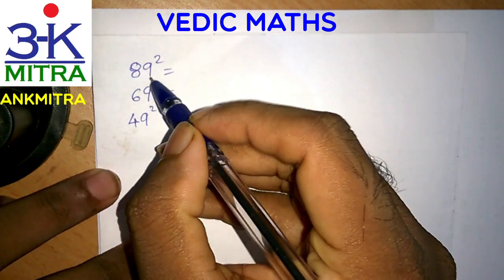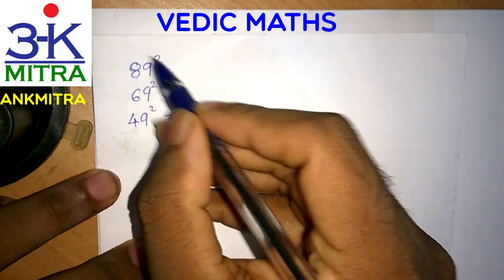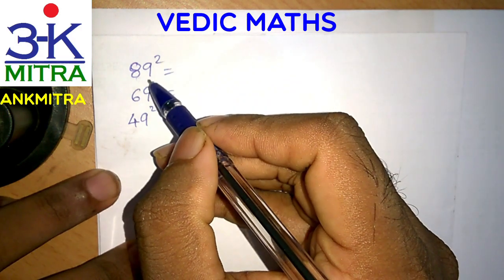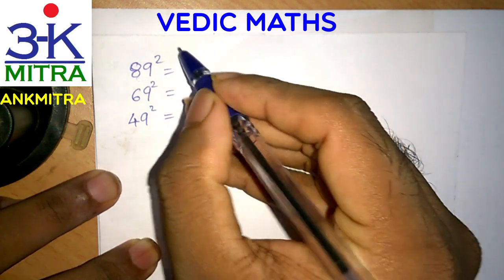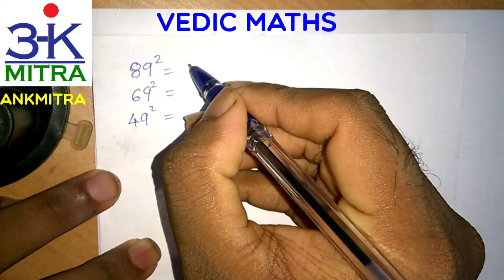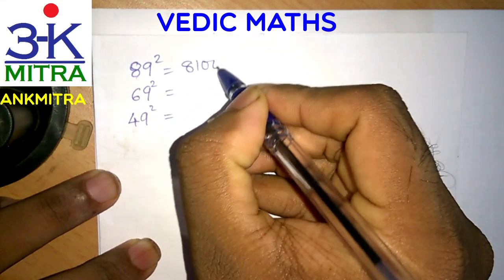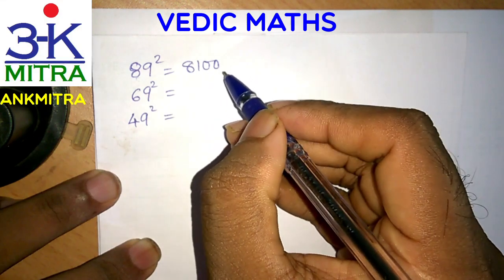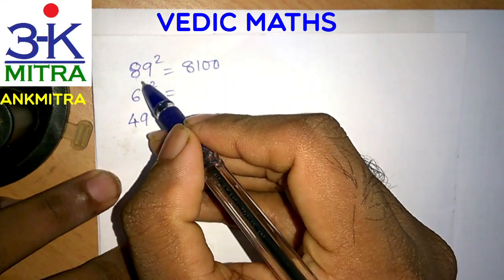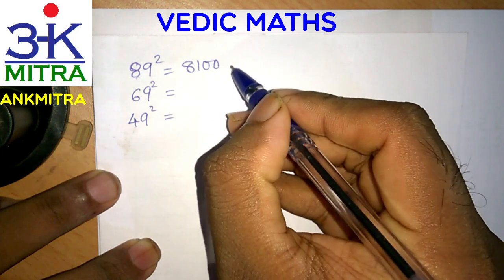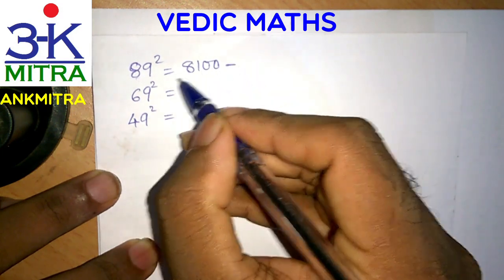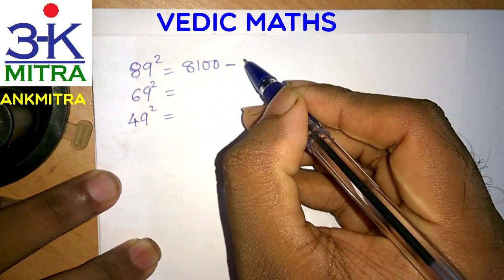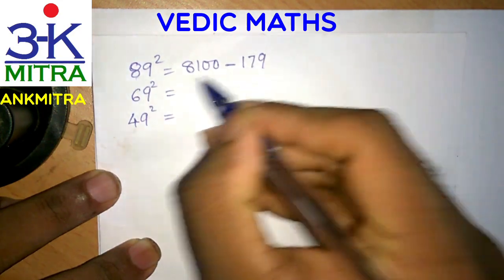So the first part is quite similar. 89 is one short of 90, 90 being the nearest perfect round number. We'll first write down the square of 90, which is 8100. Then subtract the sum of 90 and 89 from this number. The sum of 90 and 89 is 179, so 179 is to be subtracted from 8100.